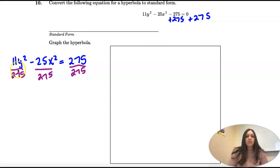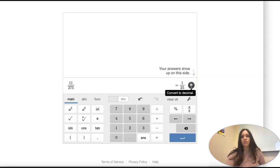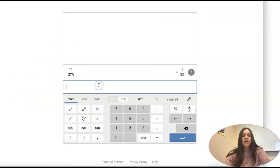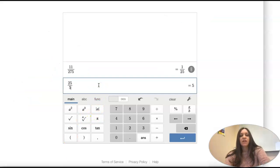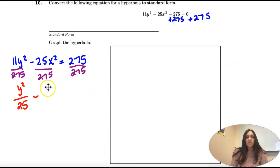And now we'll simplify. So 11 over 275 is 1 over 25. So y squared over 25 minus 25 over 275. So this is going to be x squared over 11 equals 1.